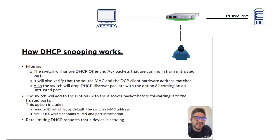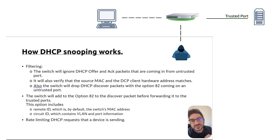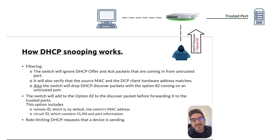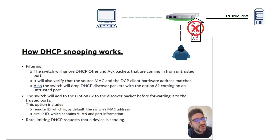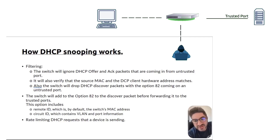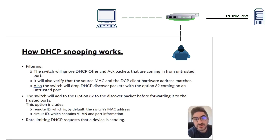The switch will also verify the source MAC address of the user against the DHCP client hardware address, checking that those two match. The switch will also drop any packets coming in with Option 82 configured — I'll explain what Option 82 is shortly. But remember: if you want to configure DHCP snooping on aggregate switches, distribution, or core switches, you need to allow Option 82 on untrusted ports.